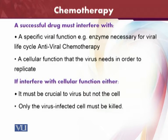A successful drug must interfere with a specific viral function, for example an enzyme necessary for the viral life cycle in antiviral chemotherapy, or a cellular function that the virus needs in order to replicate. If it interferes with a cellular function, it must be crucial to the virus but not to the cell, and only the virus-infected cell must be killed. There are many normal cells inside the body, and the drug should be capable of killing only the virus-infected cells.